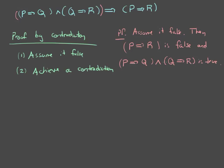Well, if this statement is true, then both of them are true. Therefore, P implies Q is true, and Q implies R is true. Well, if P implies R is false, then you get that R is false and P is true.